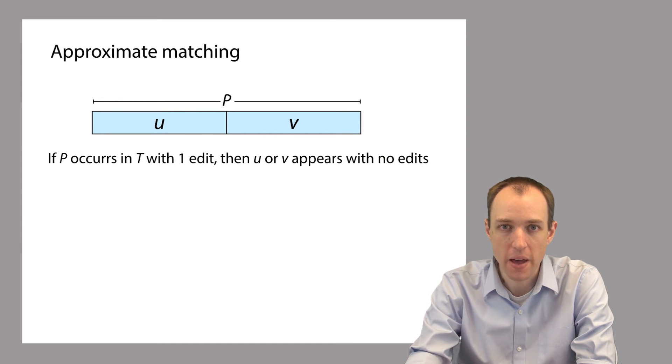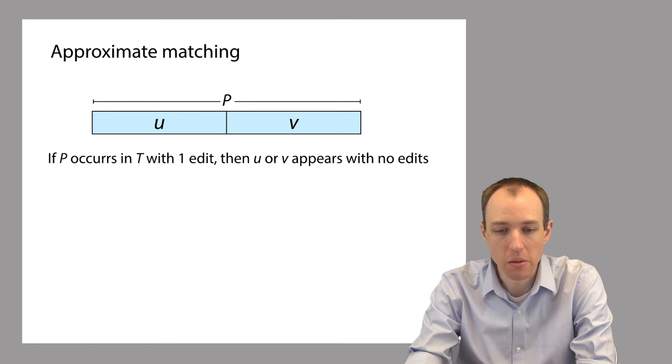So let's say we start with our pattern P, and the first thing we do is divide it up into two pieces, two halves, which are labeled u and v here. So u and v are two non-overlapping substrings that cover P, basically just halves of P. And I'll refer to these sometimes as partitions, so u and v are two partitions of the string P.